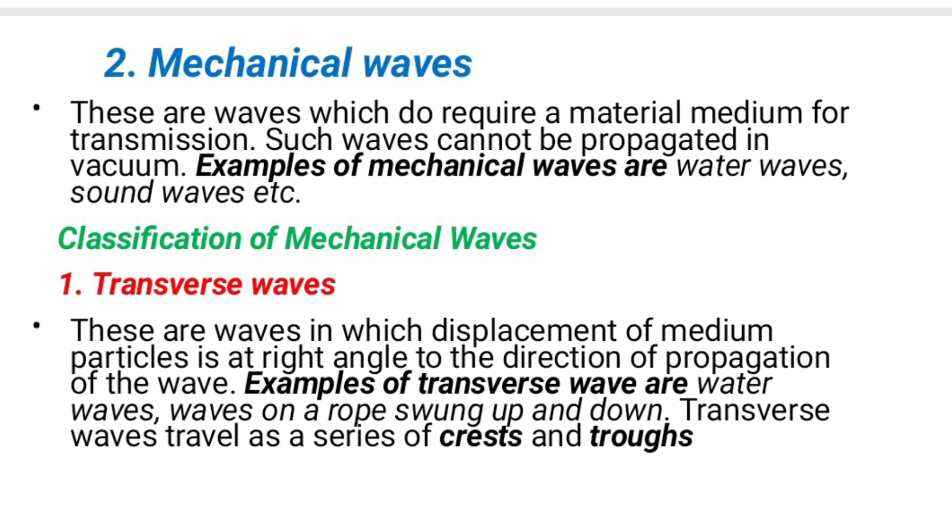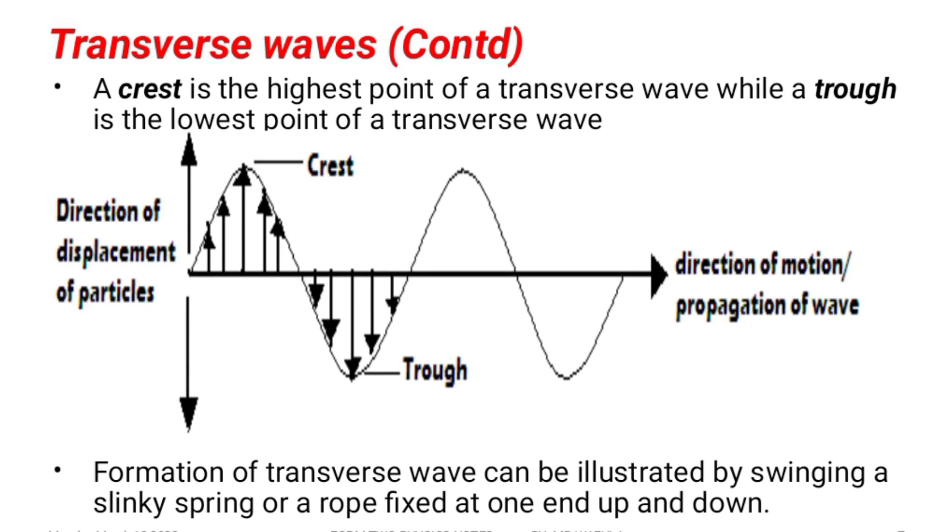Transverse waves are waves in which the displacement of the medium of the particle is at right angle to the direction of the propagation of the wave. For example, water wave. A good example is when a rope is moved up and down, we form what we call transverse wave. This is a transverse wave. We have a crest on top there, a trough down here. These are two waves. A complete wave will comprise a crest and a trough. A crest is the highest point of the transverse wave, while the trough is the lowest point of the transverse wave.